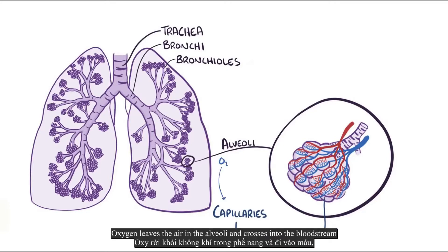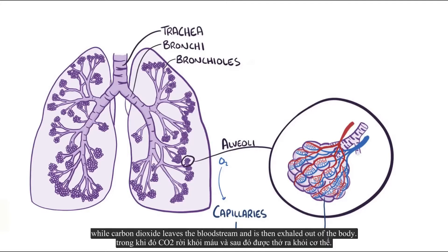This is where the majority of gas exchange happens in the lungs. Oxygen leaves the air in the alveoli and crosses into the bloodstream, while carbon dioxide leaves the bloodstream and then is exhaled out of the body.